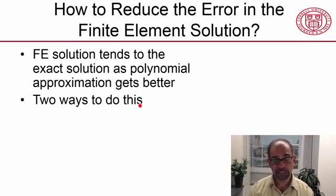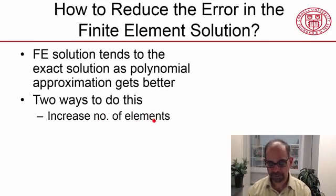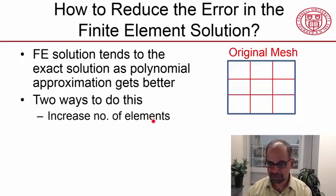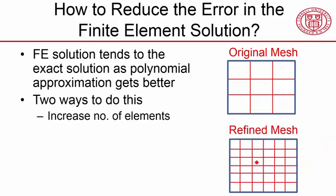There are two ways to do this. The first is to increase the number of elements. If this is our original mesh, we can refine the mesh — we can use twice the number of divisions in each direction, going from nine elements to 36 elements.